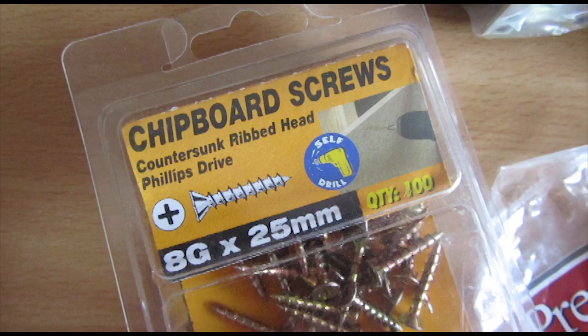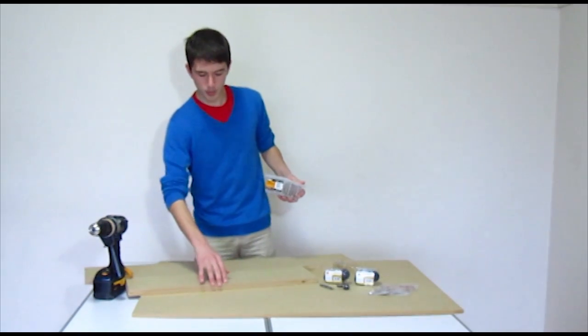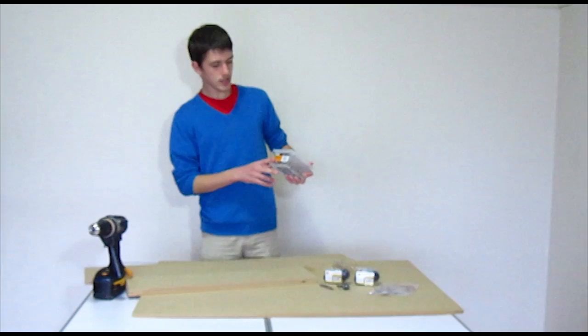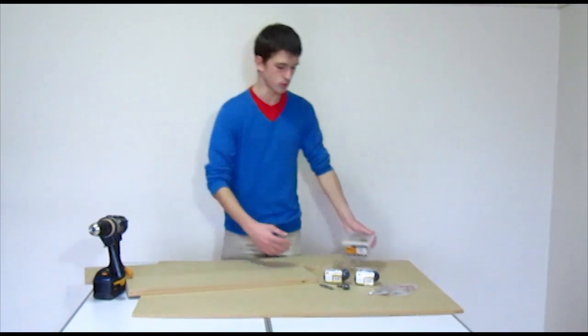These are 25mm screw bits and screws, which we need for screwing our boards in. Don't forget that our boards are 12mm MDF. So 25mm is the perfect size to drill onto an adjacent board.